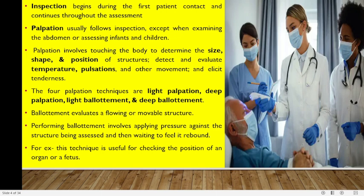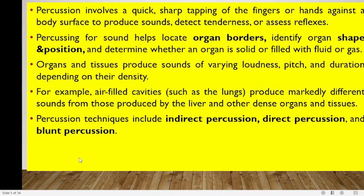Organs commonly tested for rebound tenderness include the appendix and the fetus. Percussion involves a quick sharp tapping of the fingers or hands against a body surface to produce sounds, detect tenderness, or assess reflexes. Percussion for sounds helps locate organ borders, identify organ shape and position, and determine whether an organ is solid or filled with fluid or gas.